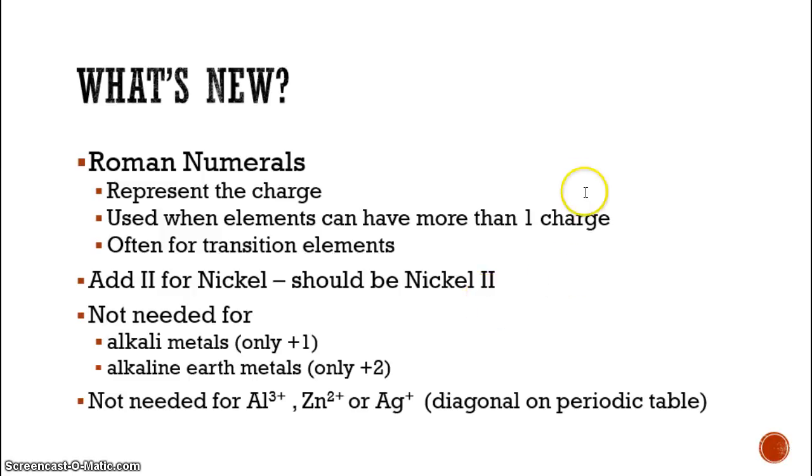So we have Roman numerals. They're not needed for alkali metals and alkaline earth metals. And every year someone always asks me, well, can't I just put a Roman numeral for everyone and then I won't forget them? Because it's wrong when you forget them. It's also wrong if you add them when they're not supposed to be there. So we don't say sodium Roman numeral one for the sodium ion. It's just sodium. And we always know that sodium is going to be a plus one charge. Calcium is not calcium with a Roman numeral two. It's just calcium because it's an alkaline earth metal and we know that has a plus two charge.